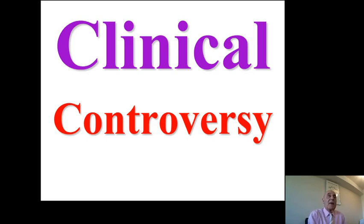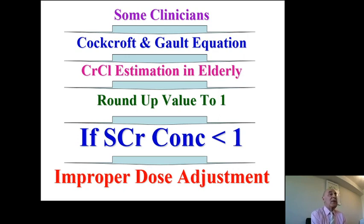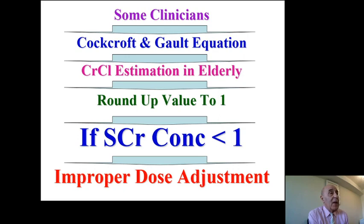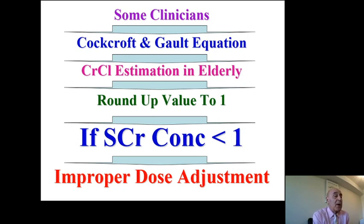A clinical controversy: some clinicians use the Cockcroft-Gault equation to estimate creatinine clearance in the elderly and then round up the value to 1 if the serum creatinine concentration is below 1. This will definitely lead to improper dose adjustment and may expose the patient to harmful effects.